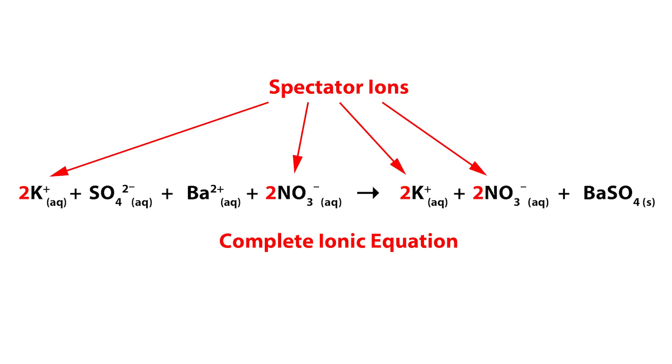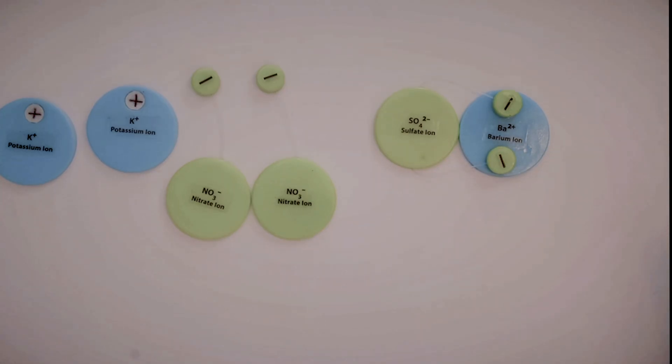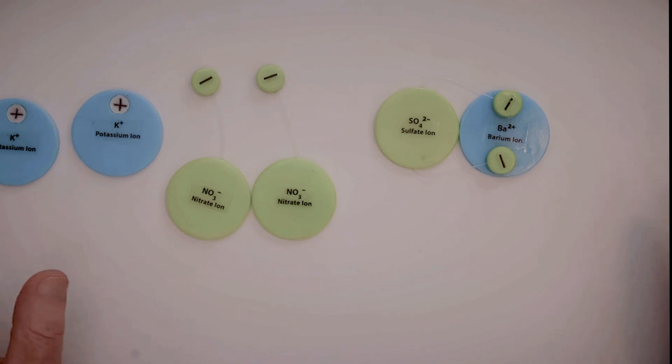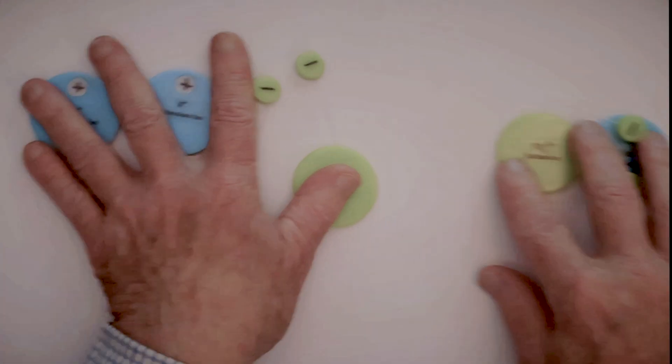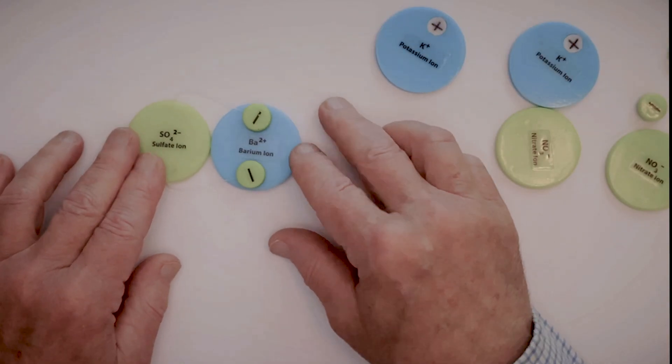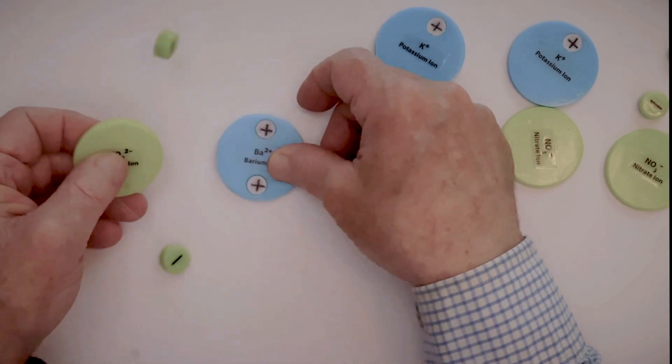They're called spectator ions. You see that with the red arrows here. They don't do anything. They're just watching. They're not doing anything. The real thing is happening between the barium and the sulfate. And so there's a special equation for that. It's called the net ionic equation. So we're going to have just the stuff to make barium sulfate.